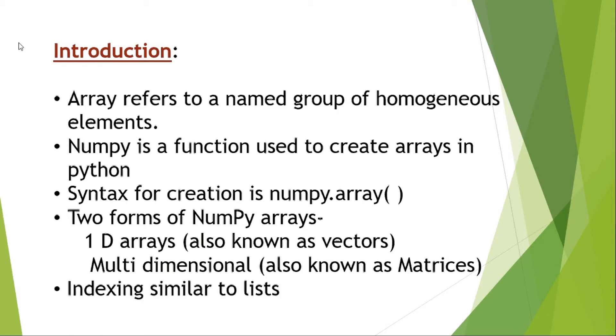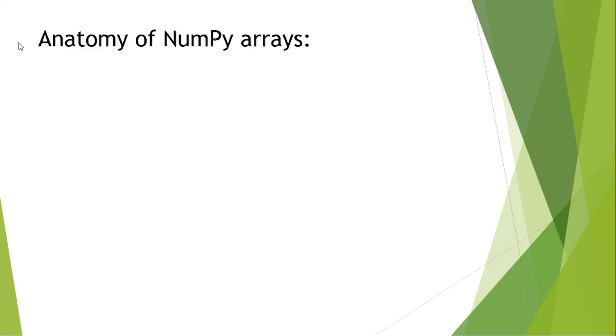Moving on to the indexing part, we have already studied list in class 11. The indexing in arrays is almost similar to list. That means the indexing starts from 0, then sequentially 1, 2, 3, etc. Now moving over to anatomy of NumPy arrays. Anatomy refers to the parts of the NumPy array, the functional units in this NumPy array.